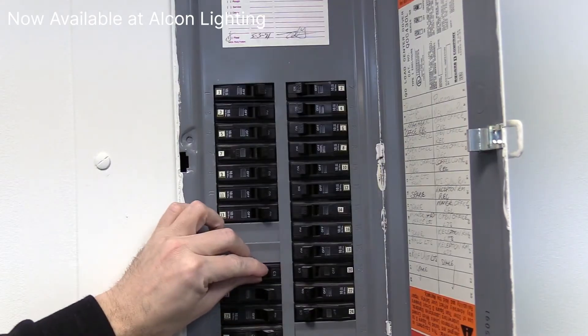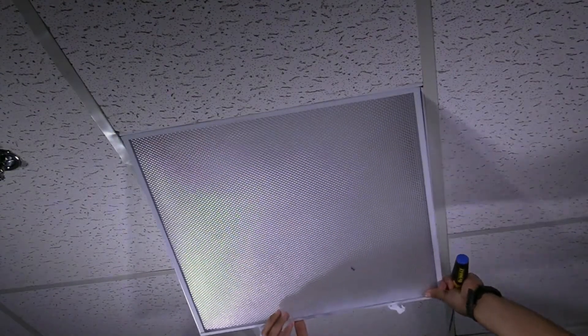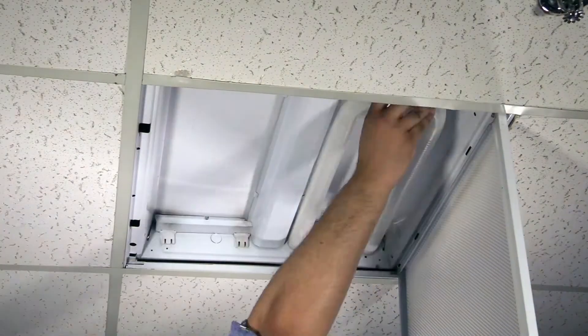We'll start by cutting all incoming power to the fixture. Now we can open the fluorescent fixture and begin removing all the electrical parts. This includes the lamps,